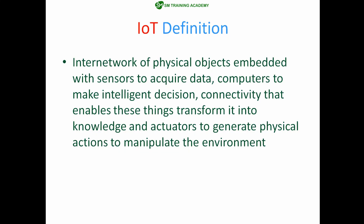Let's start with the definition of the Internet of Things. There are many definitions for IoT in the world, but the common meaning is: it is an internet network of physical objects embedded with sensors to acquire data, and computers to make intelligent decisions.